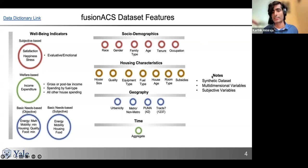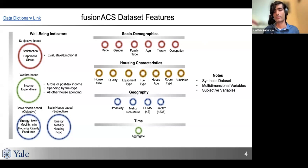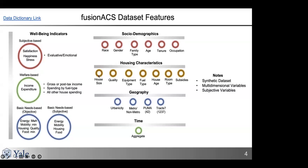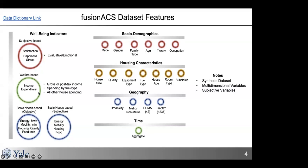A few final notes: first, this is a synthetic dataset. We want to be very clear about that and how we use validation methods to make sure the variables we produce are of reasonable quality. Alison asked for clarification — she thought of synthetic as made-up but understood these were actual ACS data.